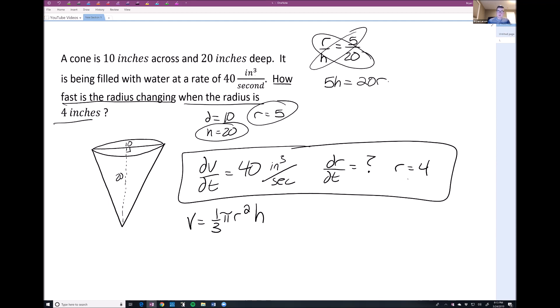Alright, but again, I want to get rid of h. So I need to know what h equals. So I'm going to simply divide this by 5 on both sides. So we get h is equal to 4 times r. Now, I'm going to take that and I'm going to substitute that right into my equation here.